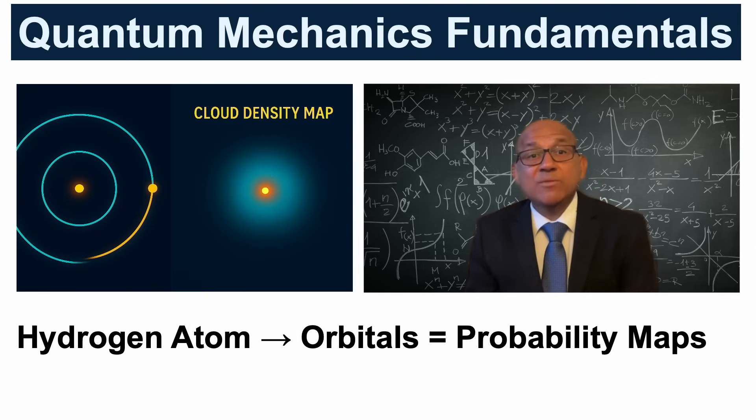Take the hydrogen atom as an example. Instead of imagining an electron orbiting the nucleus like a planet around the sun, quantum mechanics gives us probability maps called orbitals.